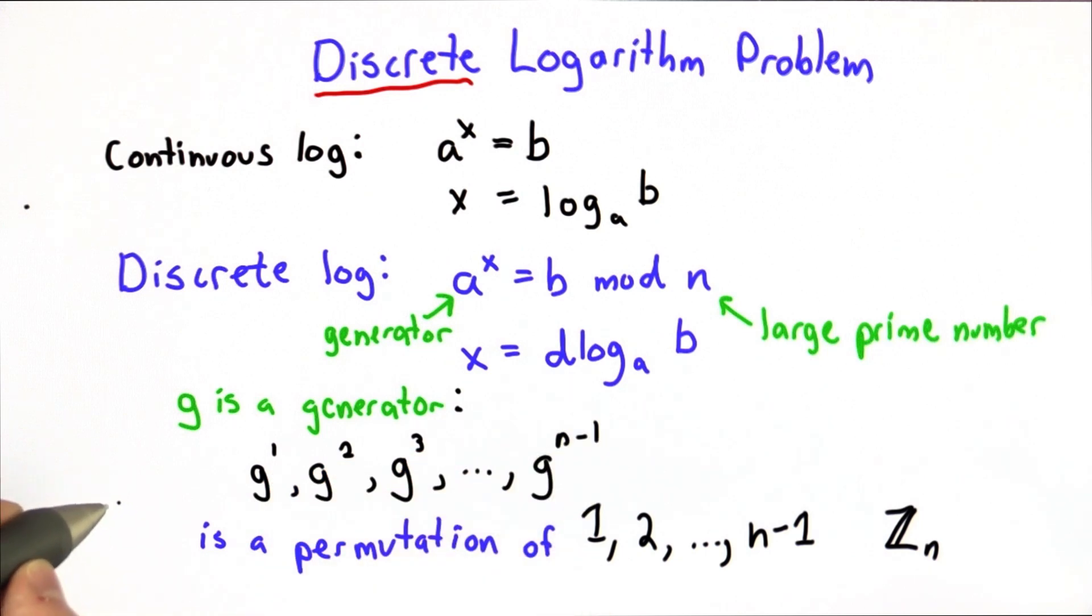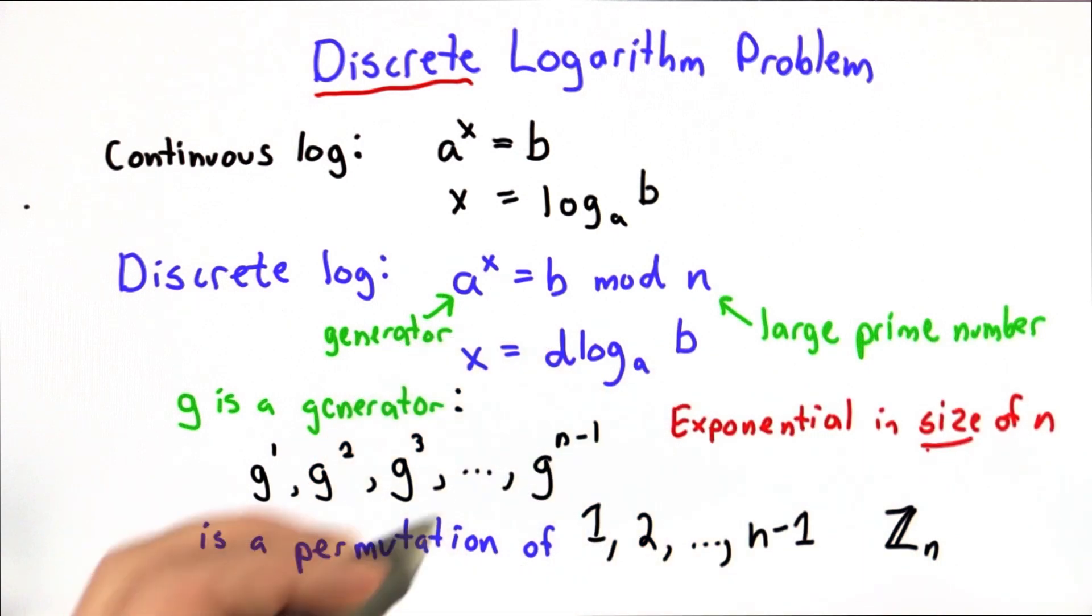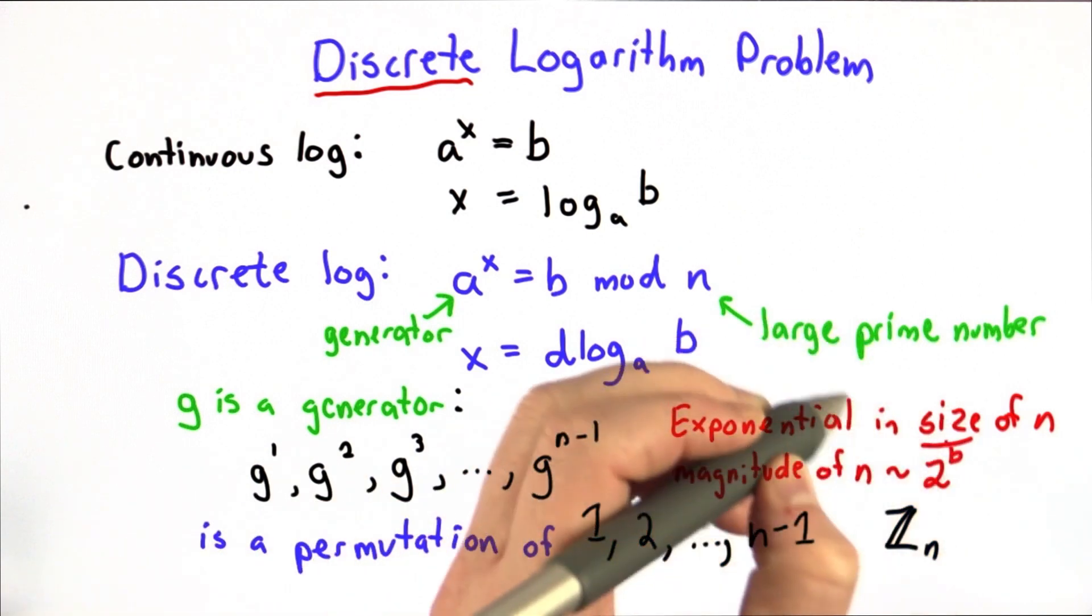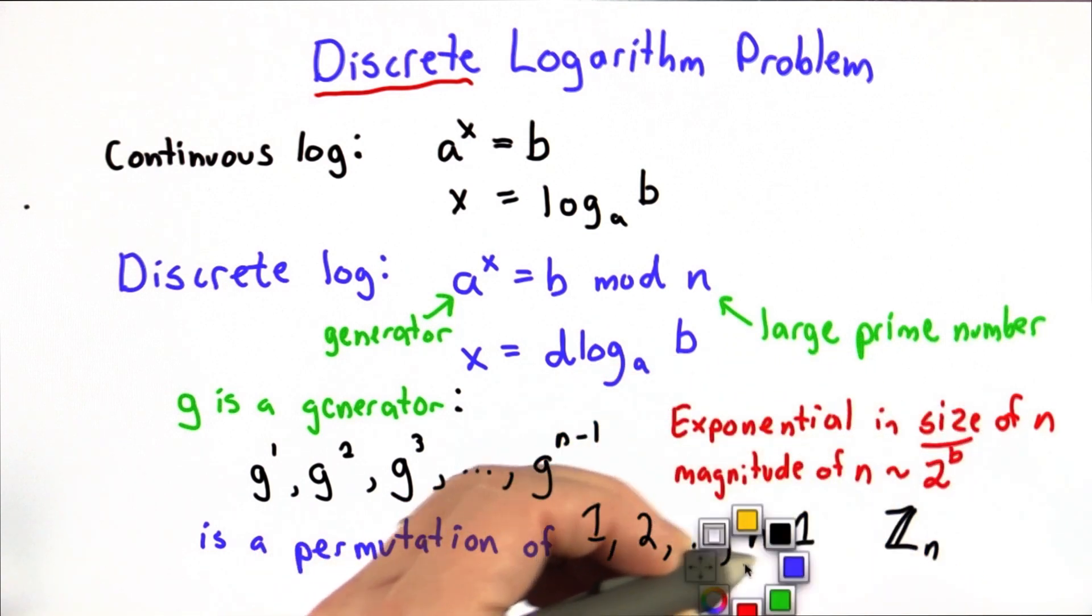So this is something we have to be careful about when we talk about hard problems. When we say it's exponential, well, it's not exponential in the value of n. It's linear in the value of n. We just need to try n operations. But the magnitude of n grows as 2 to the number of bits needed to write down n.